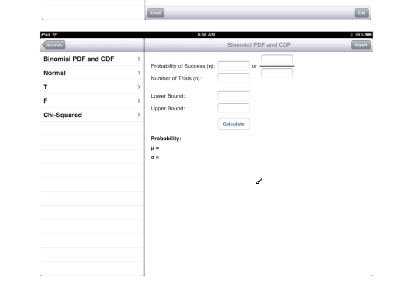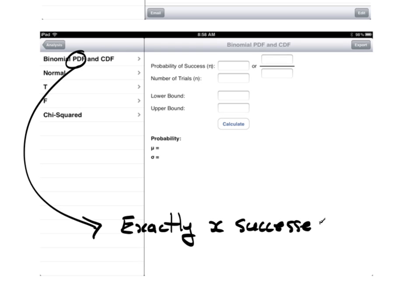Now, the idea of a PDF, think of a PDF as being used for exactly X successes. So, if I had, say, N equals 15 trials, and I want to know the probability of getting exactly 11 successes. There you go, exactly, that's equals. I would use a PDF.